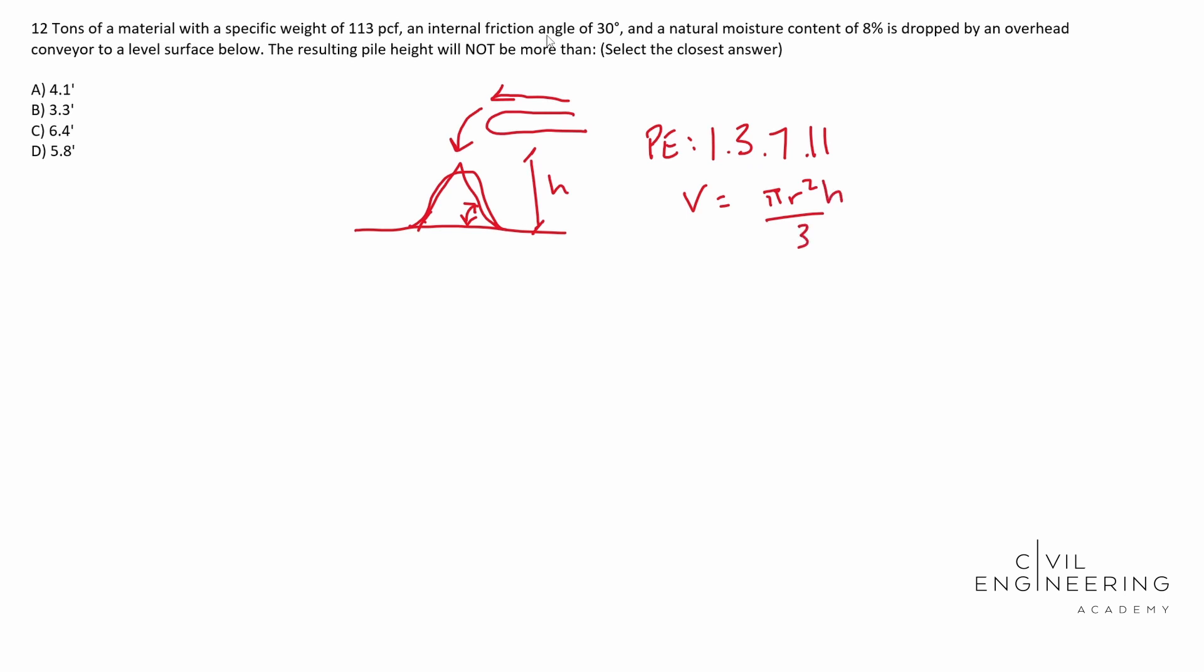So we need to start thinking, what do we have? What are we given? How can we solve for volume? Our density rho is equal to mass over volume. That's a relationship we need to know in order to solve for this. It gives us mass, 12 tons. It gives us our specific weight, which in this case we can use as our density, 113.